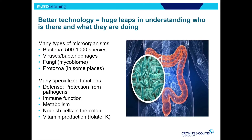Interest in the microbiome, a lot of it funded around the early 2000s by the NIH, really opened up a big door into understanding what was going on in our intestine and other parts of our body. There are up to 1,000 different species of bacteria in your gut. We think a lot about the bacteria, but there are also viruses, fungi, and protozoa — and they're not just doing nothing. They're there with very specialized functions.